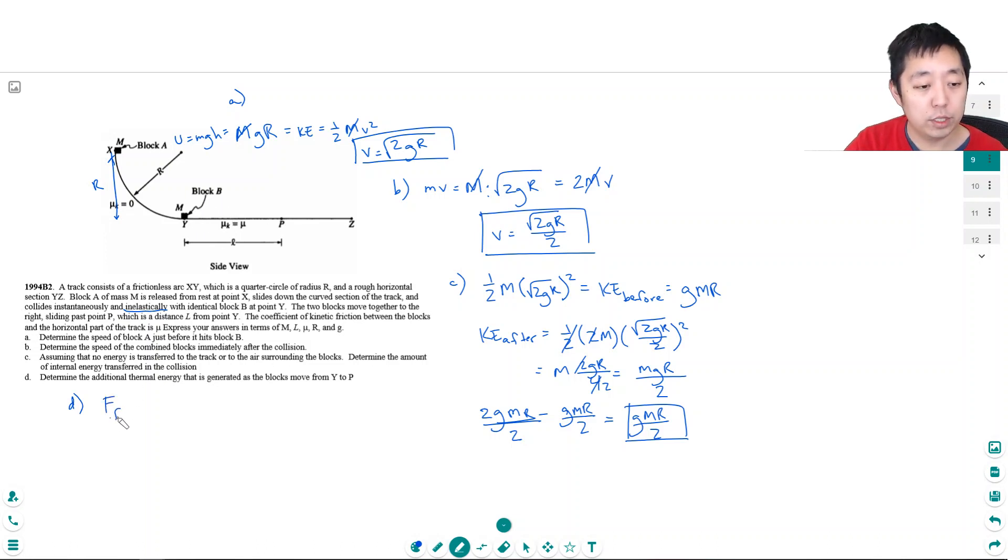So there's a couple ways you want to think about it. The friction is applying a force here. What's the force of friction? It's equal to mu times the normal force, and the normal force is 2mg because there's two blocks stuck together that are moving together. All right, and then the work done by friction, which is the thermal energy, is the force of friction times the distance we apply. That's mu 2mg times the distance is l.